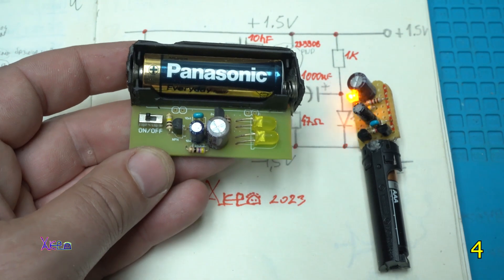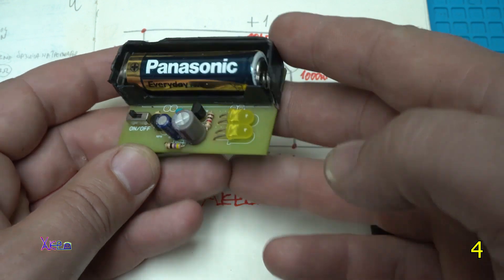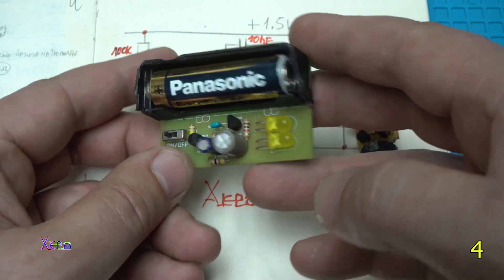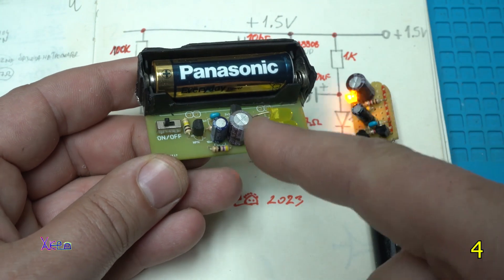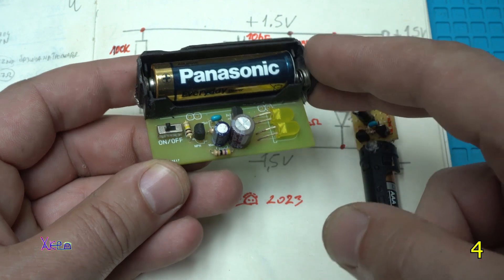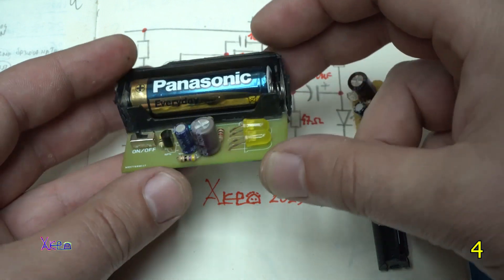Here is another one with AA battery. You can see that it's blinking. I have used the same electronic components and added a switch. And it's made on the PCB board.